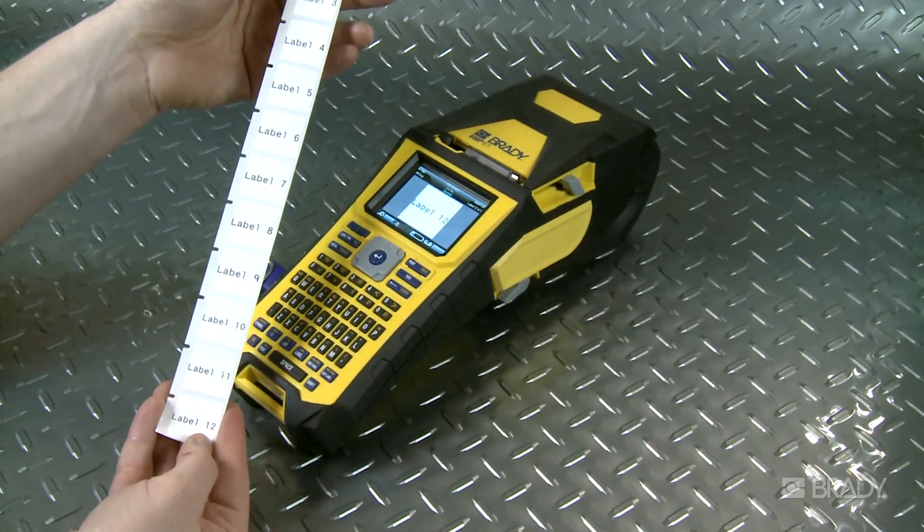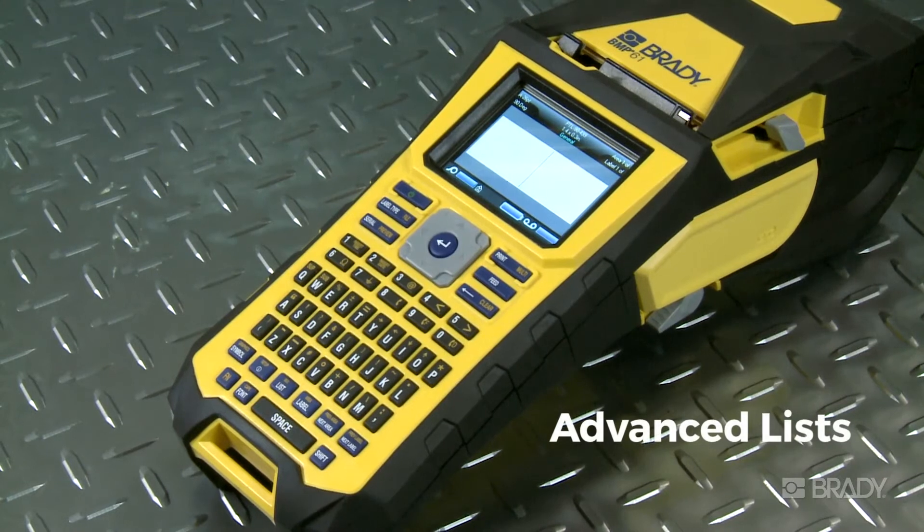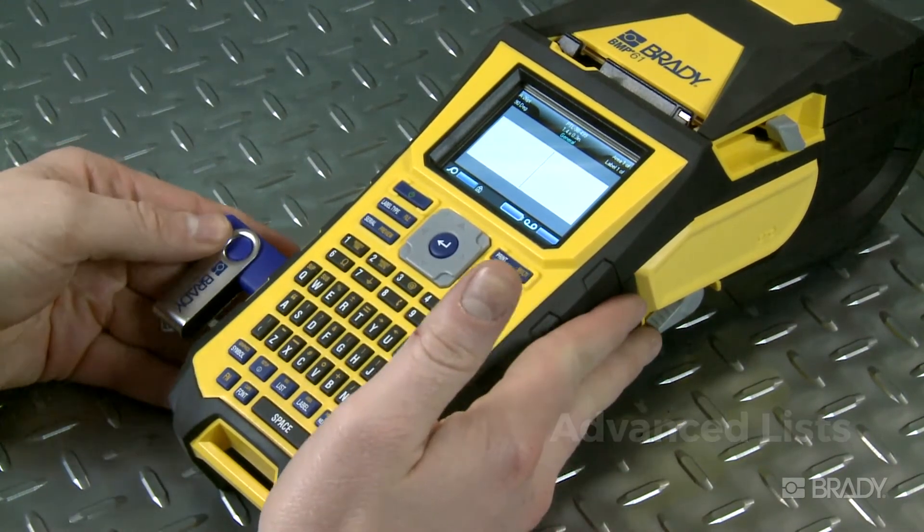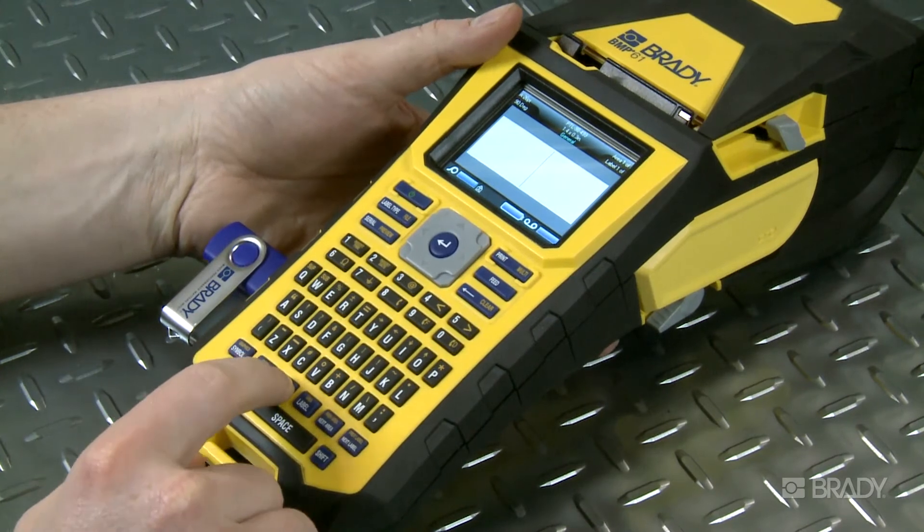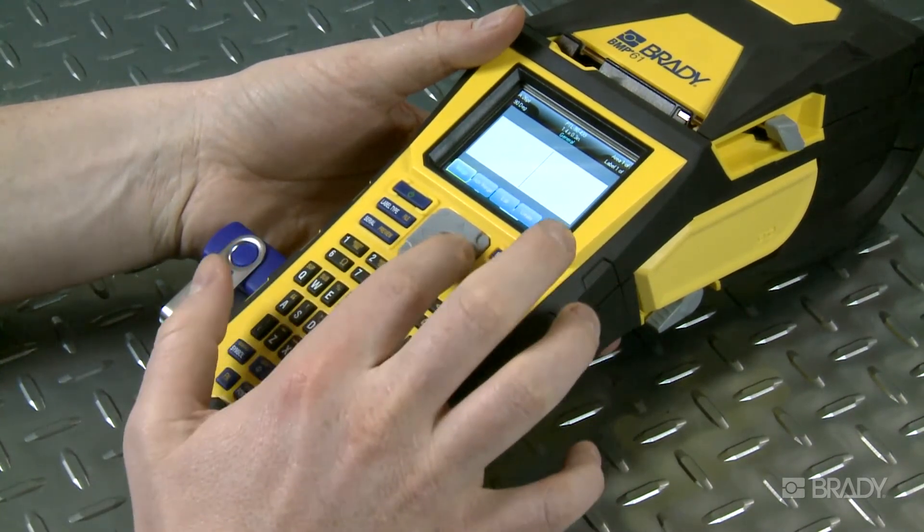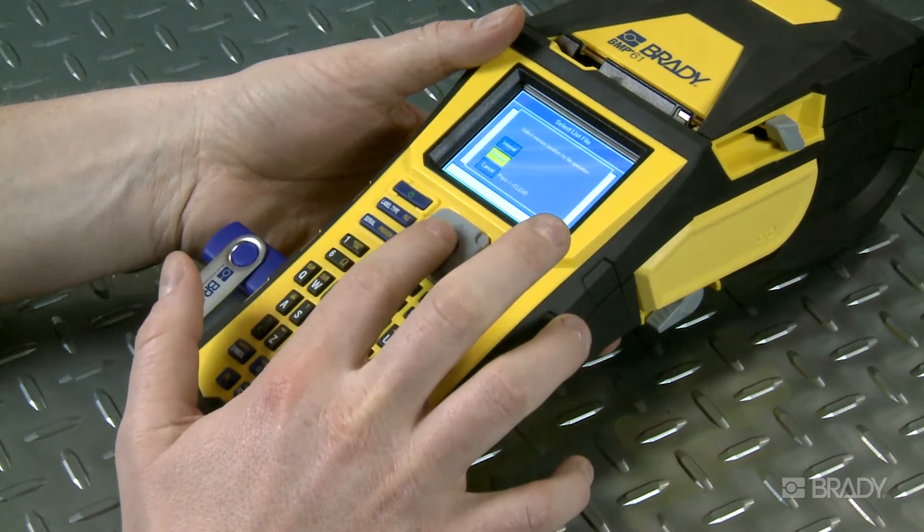To make an advanced list, go through the same steps of turning on your printer and plugging in the USB drive. After you press the List button, select the Advanced Merge button this time. Then select the External option.